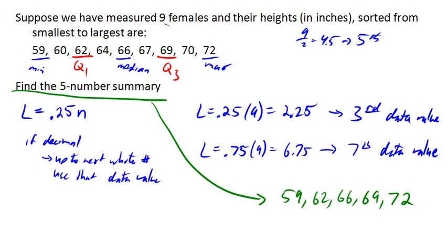So in this example, we calculated a five-number summary, and when we were using the locator method to find our quartiles, we looked at the case where the locator comes out to be a decimal value. In that case, we went up to the nearest whole value and used that data value.